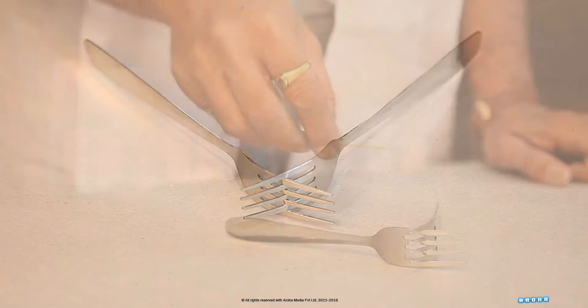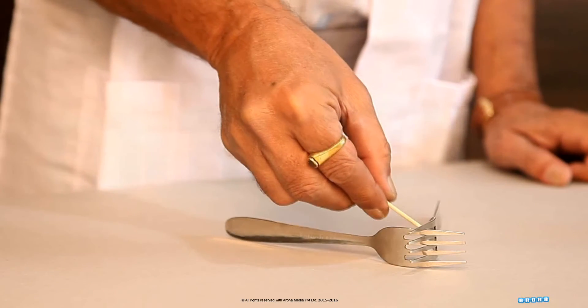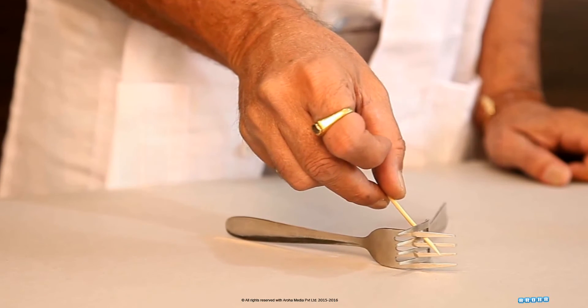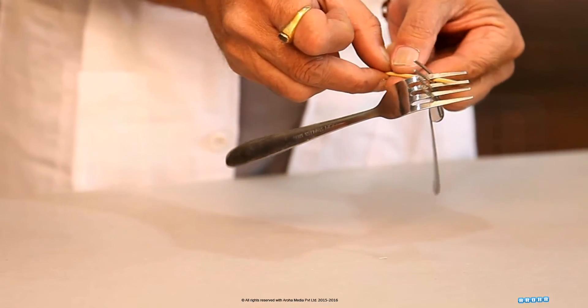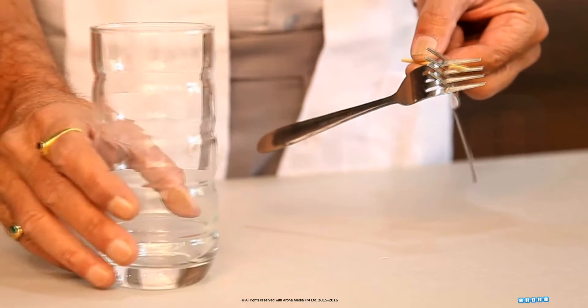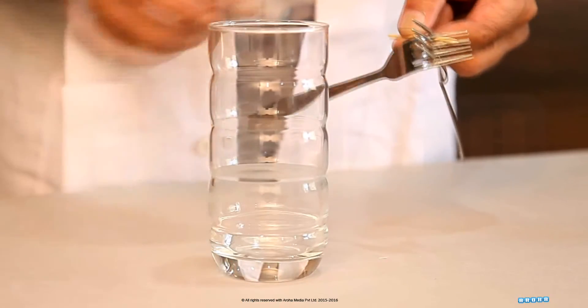Done. And now put the toothpick through the forks like this and lift them slowly. Now place the toothpick with the forks on top of the glass.